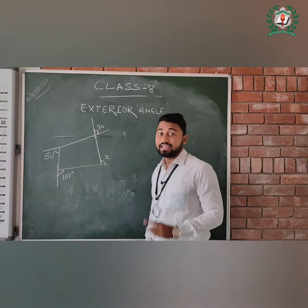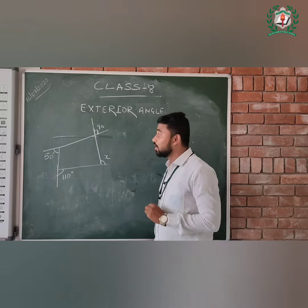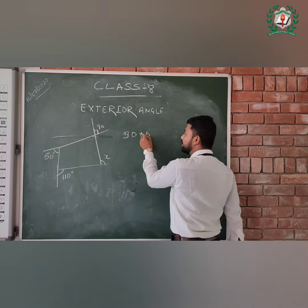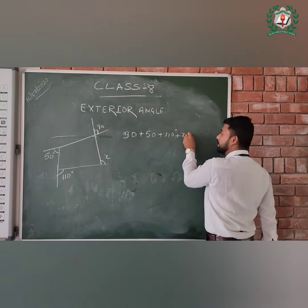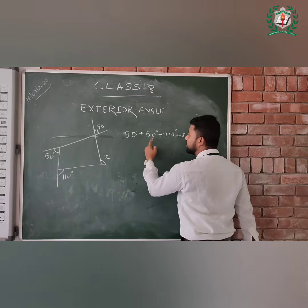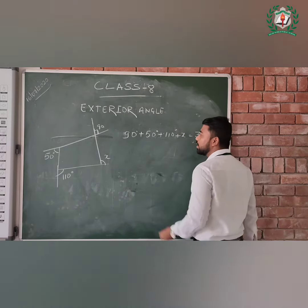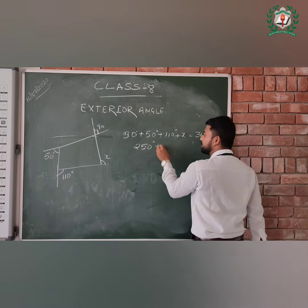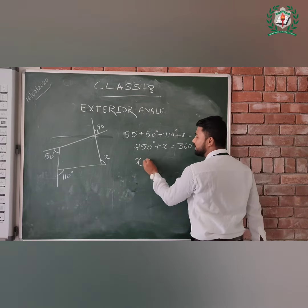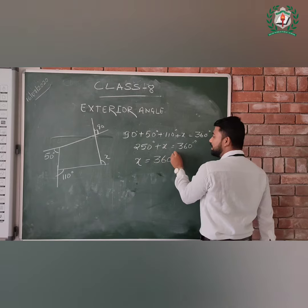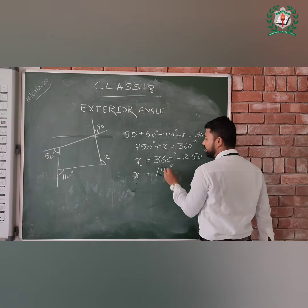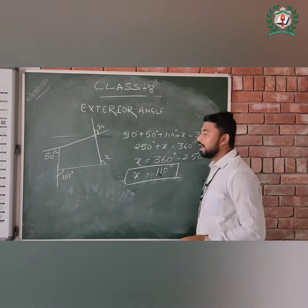How do we find this? We know that the sum of exterior angles of a polygon is 360 degrees. Since all the angles are exterior, we add: 90 plus 50 plus 110 plus x equals 360 degrees. That gives us 250 plus x equals 360. Shifting to the right side, x equals 360 minus 250, so x equals 110 degrees.